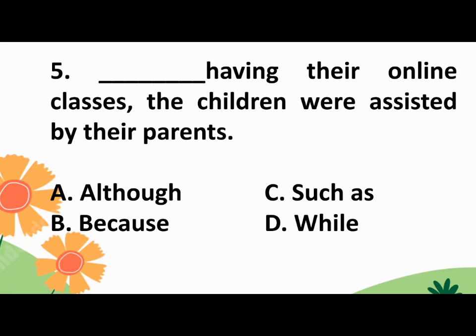Number 5: Blank having their online classes, the children were assisted by their parents. A. Although, B. Because, C. Such as, or D. While?